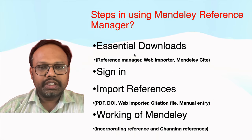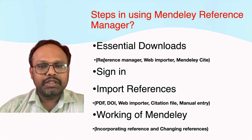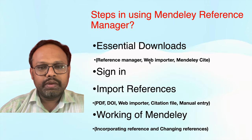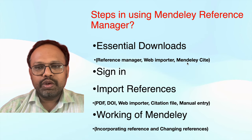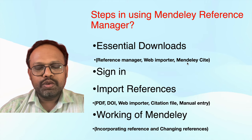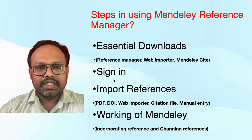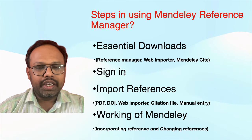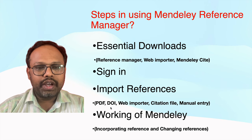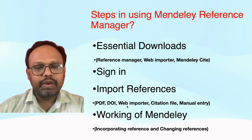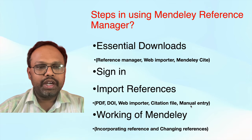First, you need to do the essential downloads. There are three downloads: number one is the Reference Manager software, number two is the web importer which is specific to your browser, and the Mendeley Cite plugin which is specific to your document writing software — in this case, Microsoft Word. Then the next step is signing in: you need to create an Elsevier account and sign in. Then you need to import references. I am going to show five commonly used ways: extracting a PDF, importing via DOI, direct importation through web importer, downloading the citation file, and manual entry of data.